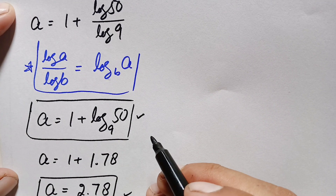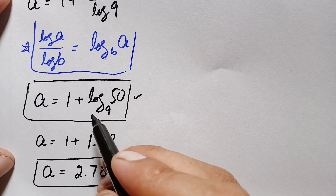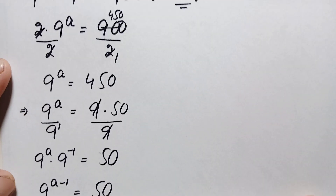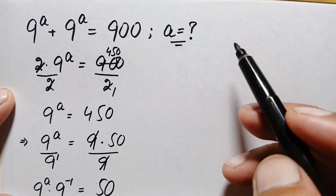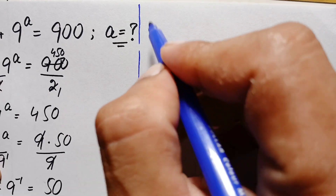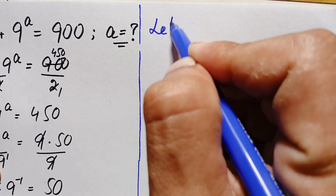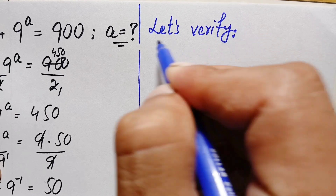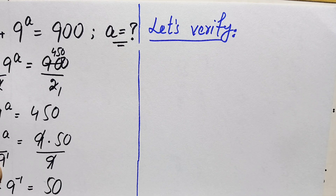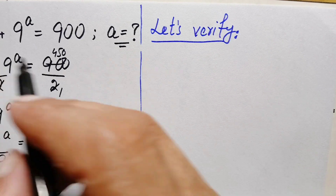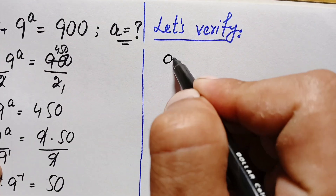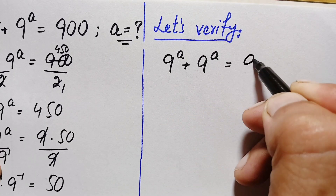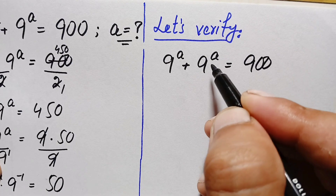Now we will verify whether this value of a is the exact and correct answer to this exponential math problem. Let's verify. We write the original problem again: 9^a + 9^a = 900, and substitute our value of a.